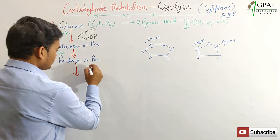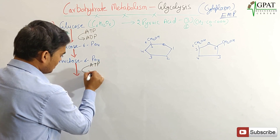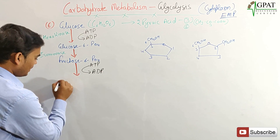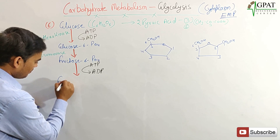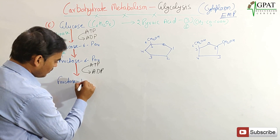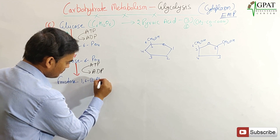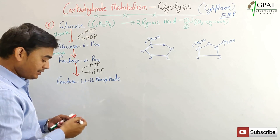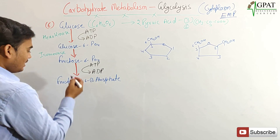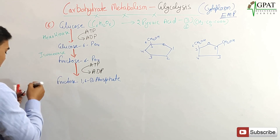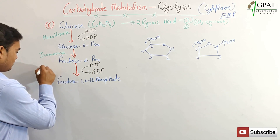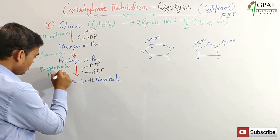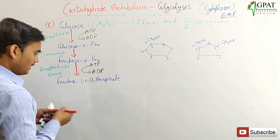Fructose-6-phosphate is again phosphorylated using ATP, which is converted to ADP, adding one more phosphate group to form fructose-1,6-bisphosphate. Since this involves phosphate group addition to fructose, the enzyme used is called phosphofructokinase.